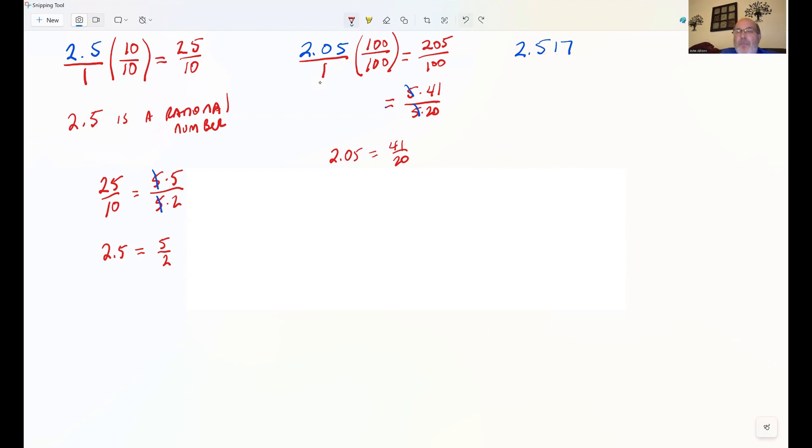If I multiply by 1,000, which has three zeros, that's going to move the decimal place three decimals to the right. So we're going to multiply this one by 1,000 over 1,000. And that's going to equal 2,517 over 1,000.